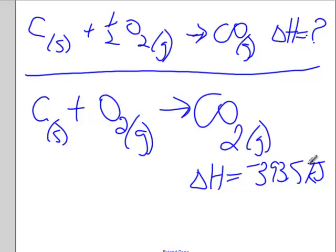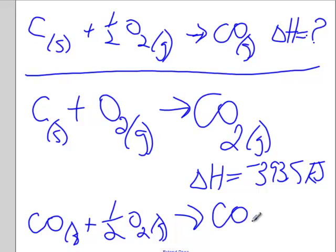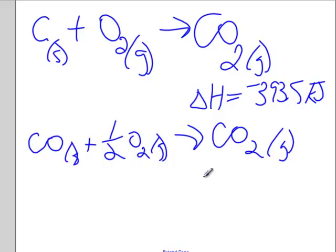And let's say we had another reaction where carbon monoxide gas reacts with some more oxygen to give us carbon dioxide gas. And we measure the delta H for that as being negative 283.0 kilojoules.